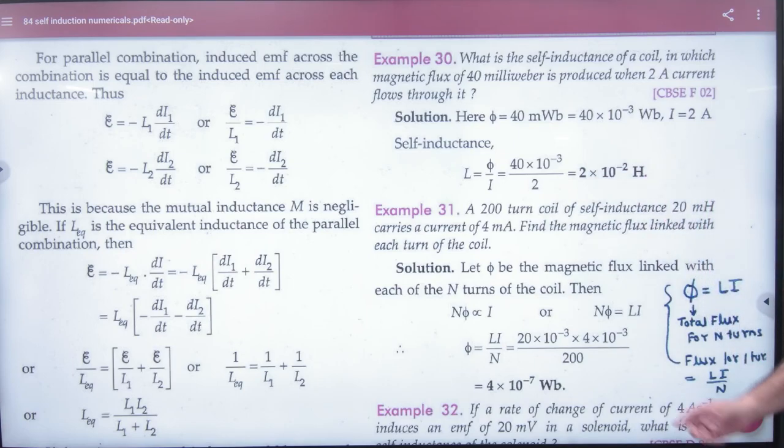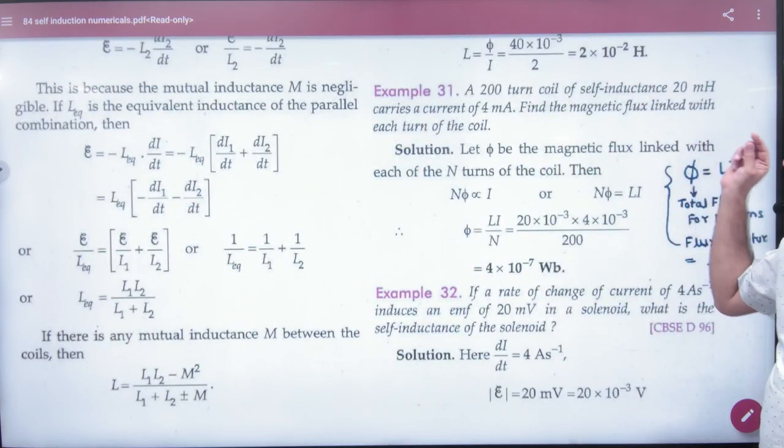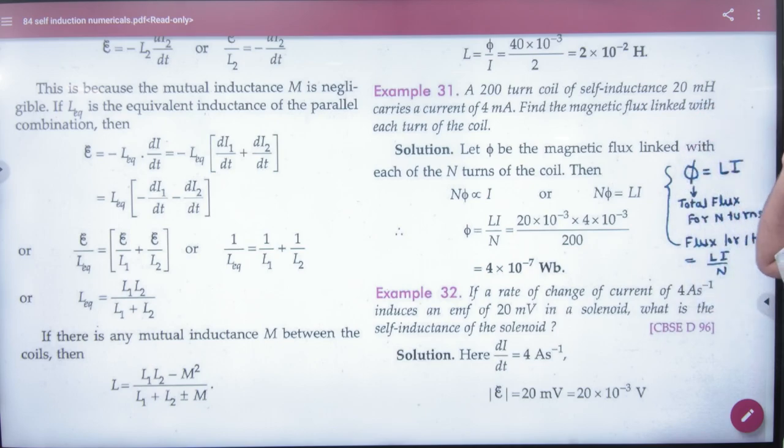First answer. Example 31: A 200 turn coil of self-inductance L given, 200 turns, L given is millihenry.